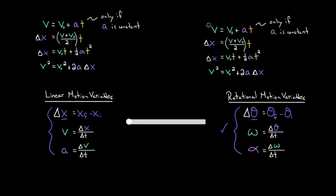So instead of v, the final velocity, we have omega, the final angular velocity. Instead of v-initial, the initial velocity, we have the initial angular velocity. Instead of acceleration, we have angular acceleration. And time is just time — there's no such thing as angular time or linear time. As far as we know, there's only one time, t, and that works in either equation.